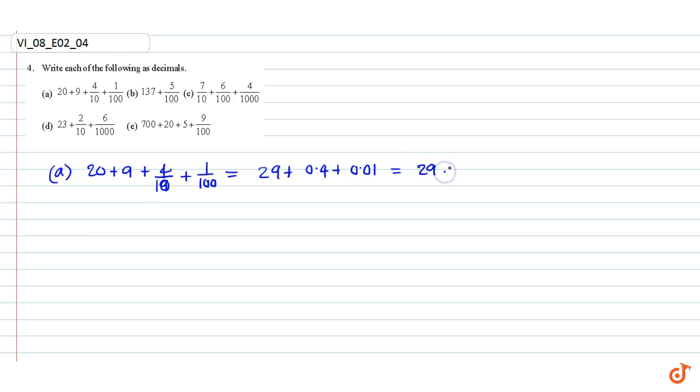Part (b): 137 plus 5 by 100. This is equal to 137 plus 0.05, equal to 137.05.